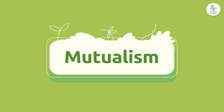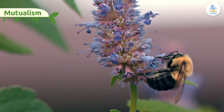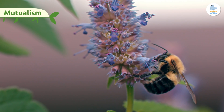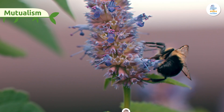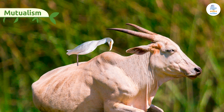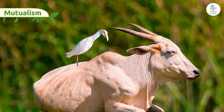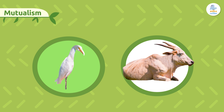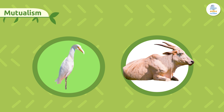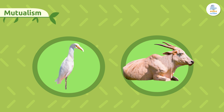Mutualism. In the case of mutualism, both species benefit from the relationship. For example, a bird eating the parasites that infect the body of an ox is beneficial for the bird because it allows it to obtain nutrients. It's also good for the ox, as it avoids any harm that the parasites might cause.